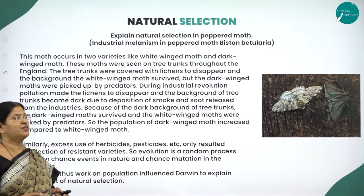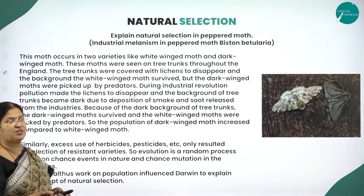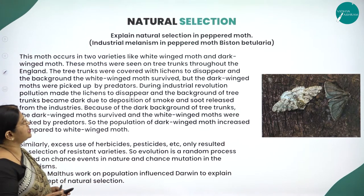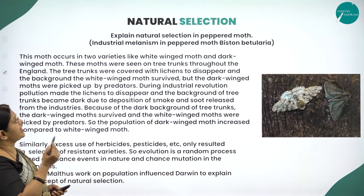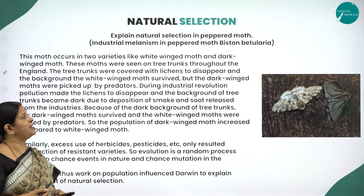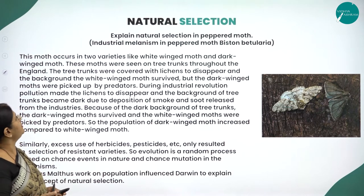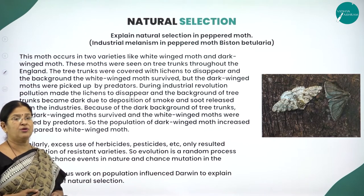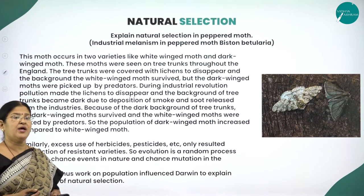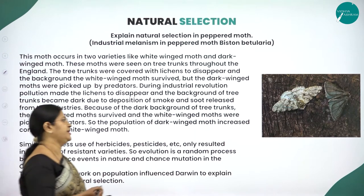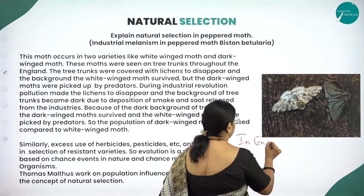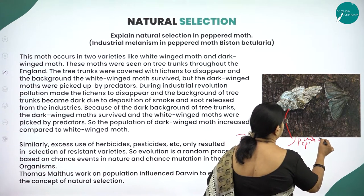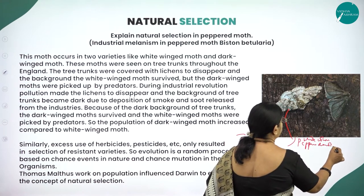Moving on to the next very important concept: industrial melanism, otherwise called natural selection. This is also one evidence to prove the process of evolution. In the exam it is usually asked: explain natural selection in the peppered moth. Industrial melanism in the peppered moth — Biston betularia. In England in the 19th century, there were two types of moth: one called the white winged moth Biston betularia, and the other the melanic form Biston carbonaria.